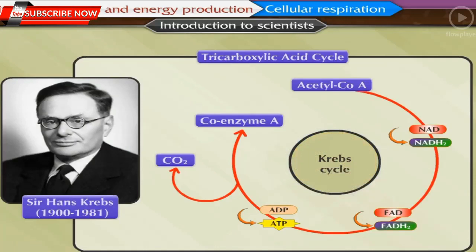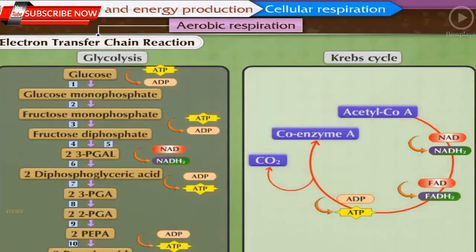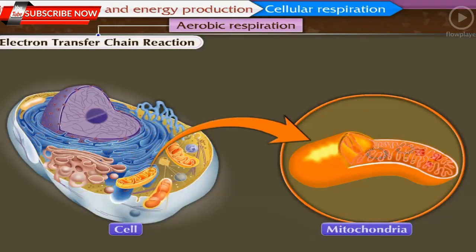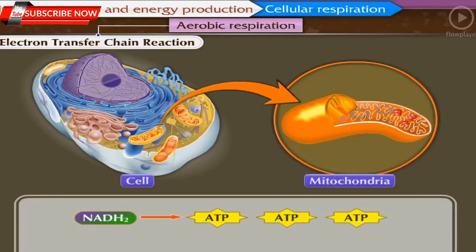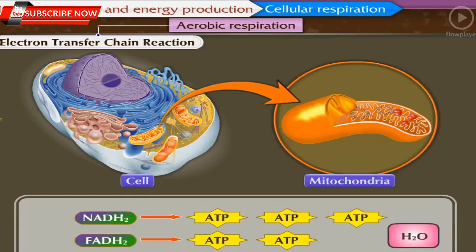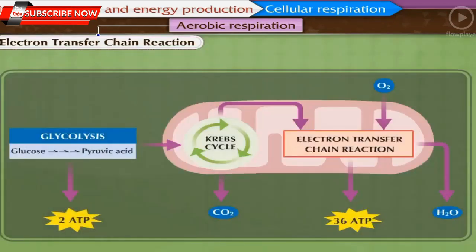Electron transfer chain reaction: molecules of NADH₂ and FADH₂ formed during glycolysis and the Krebs cycle participate in the electron transfer chain reaction. In this reaction, each NADH₂ molecule produces three ATP molecules, and each FADH₂ molecule produces two ATP molecules. Besides ATP, water molecules are also produced. The electron transfer chain reaction is operated in mitochondria only. Thus in aerobic respiration, when a glucose molecule is completely oxidized, carbon dioxide and water are produced along with energy.